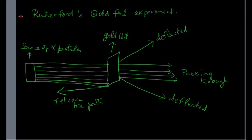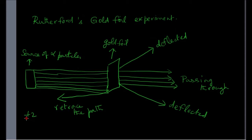After gaining knowledge about the subatomic particles, the next step was to find out how these are arranged inside an atom. Rutherford's gold foil experiment was a big leap in this regard. He bombarded a thin gold foil with alpha particles — particles with two units of positive charge and four units of mass. He chose a gold foil because gold is the most ductile metal, so you can get the thinnest sheets. He took a very thin sheet of gold and hit it with alpha particles from a radioactive source.